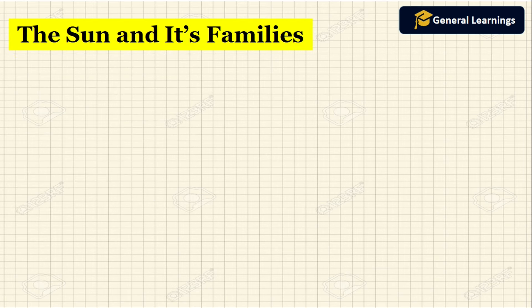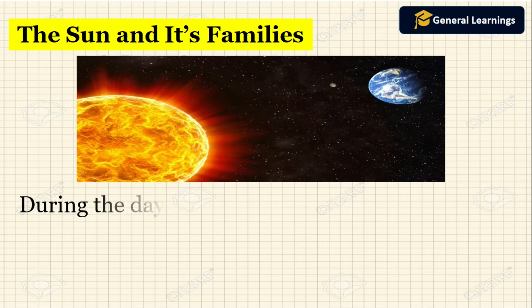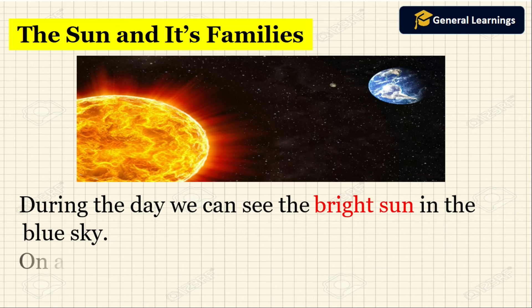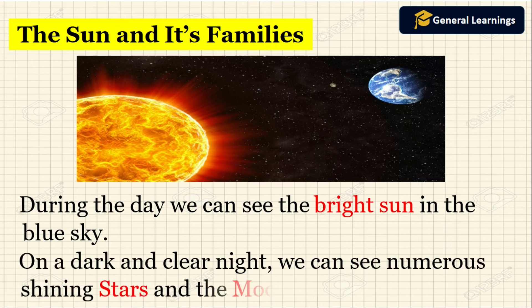Now we are going to see the sun and its families. Let us now recall. During the day we can see the bright sun in the blue sky. On a dark and clear night we can see numerous shining stars and the moon.